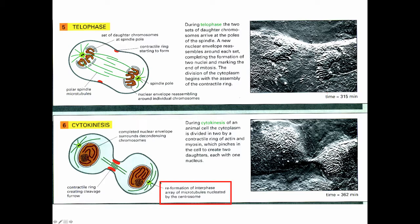As the cell has divided, there's the reformation of the interphase array of microtubules. Those microtubules are assembled by nucleation at the microtubular organizing center, which is the centrosome, and that's occurring in each daughter cell.